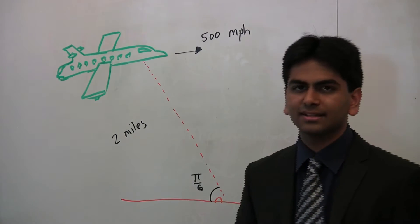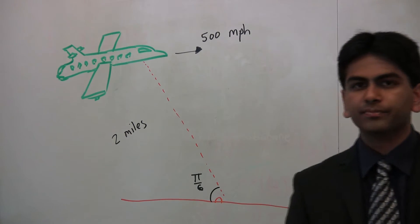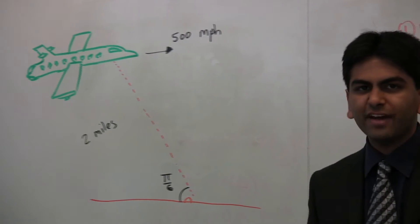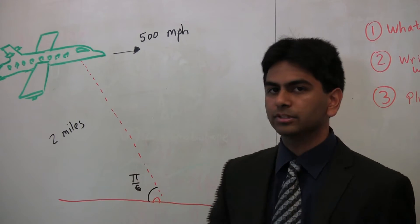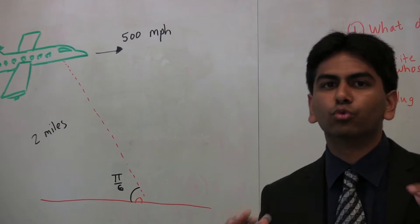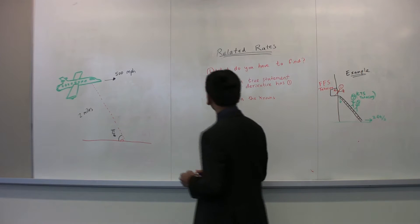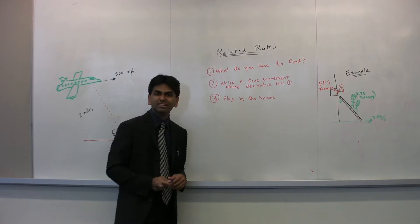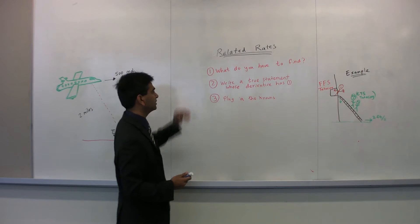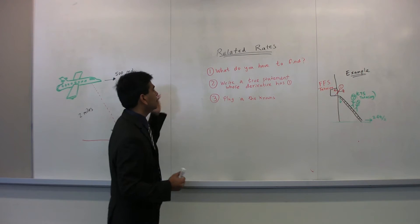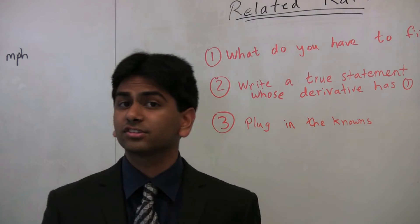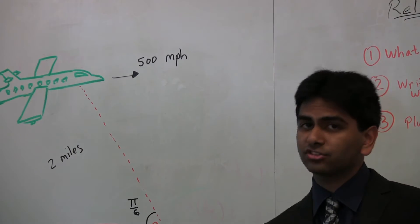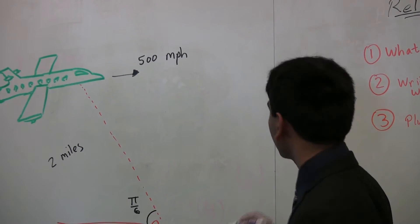We need to constantly monitor where he is. Now, this type of problem, when the question actually is how fast do you have to change the camera's angle from the ground to keep up with the plane, this is called a related rates question. So, related rates, here at FFS we use a simple three-step process to solve related rates. The first question should be obvious. You always have to ask yourself, what do you have to find? Now, this might be a little more complicated in related rates questions. Which variable do you have to solve for when the question is how fast do you have to change your angle? Well, we know that our angle is theta.